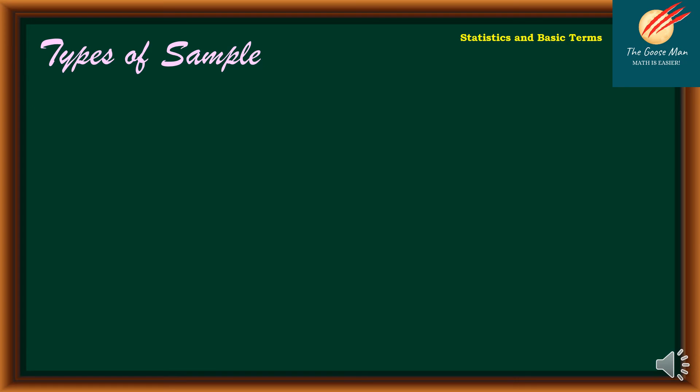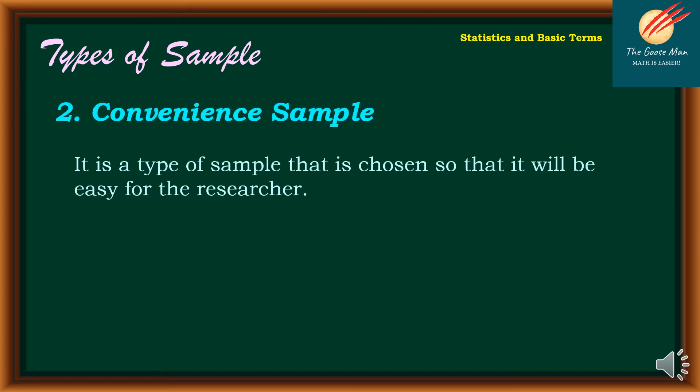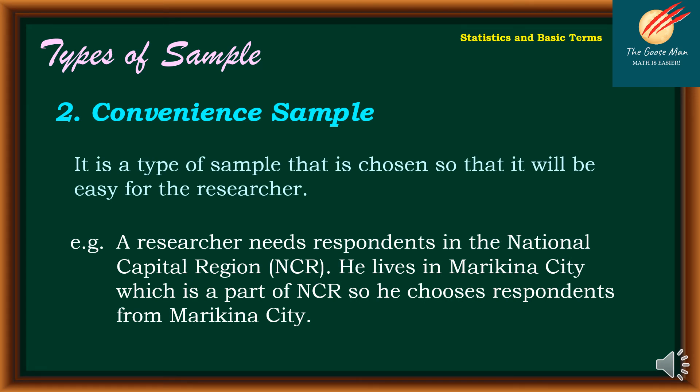The second type is convenient sample, a type chosen so that it will be easy for the researcher. For example, a researcher needs respondents in the National Capital Region. He lives in Marikina City, which is part of NCR, so he chooses respondents from Marikina City.